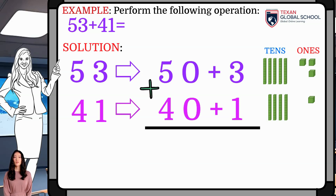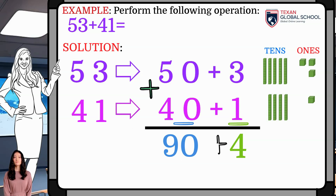Then, draw a line below to perform the addition. Now, add each column. Add 1s and 10s. 3 plus 1 is 4, and 50 plus 40 is 90. Finally, add 90 plus 4, thus obtaining 94.